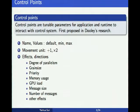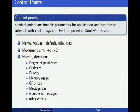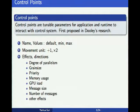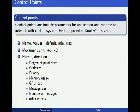Control point is a very important concept here. Control points are tunable parameters for the application and runtime to interact with the control system. A control point has special properties: it has a name used by developers to register it and acquire its value. Its value includes a default value from user input, minimum and maximum values, and the current value for the current step. Every time we change the value of a control point, we want to know the minimum moving unit — whether it increases one by one or multiplies by two.